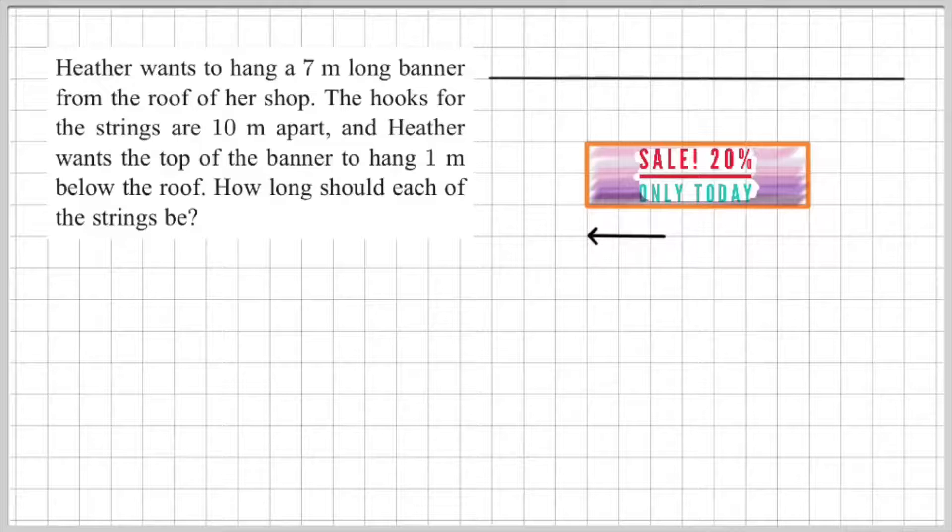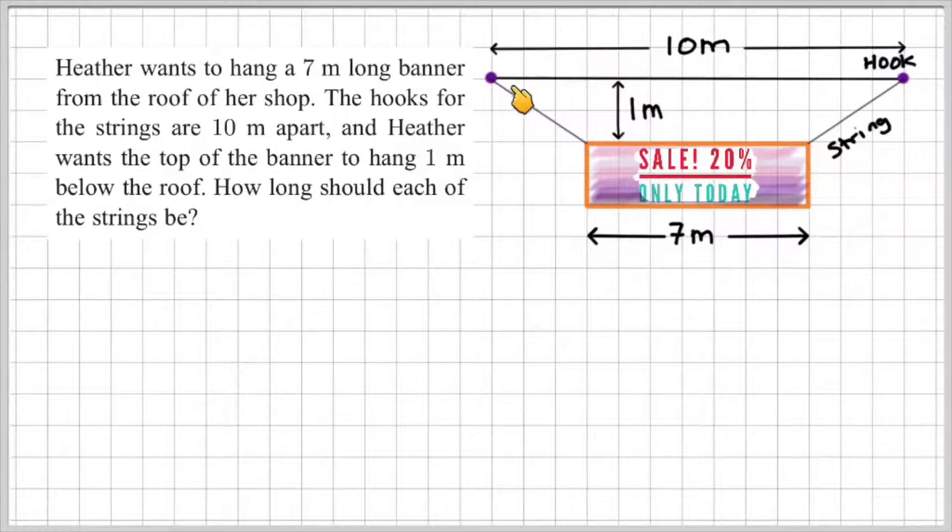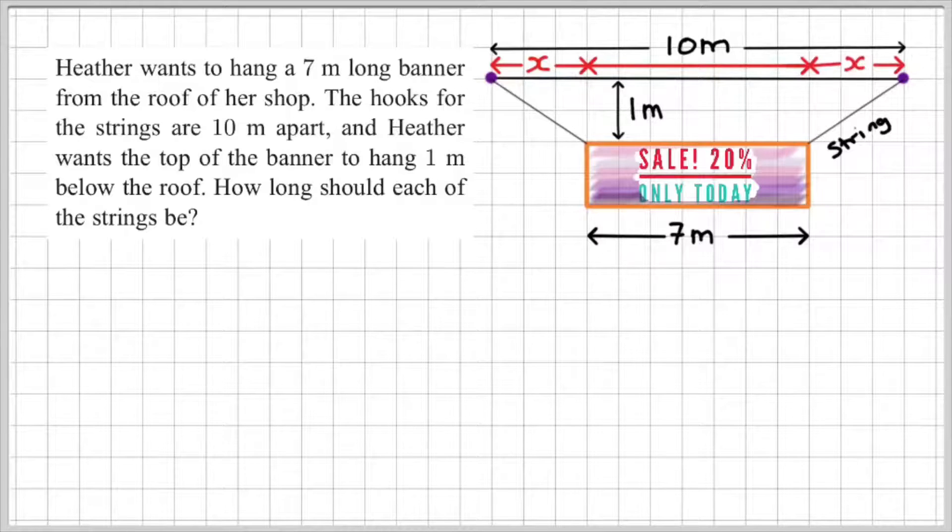So I've drawn a diagram of the banner, which is 7 meters long. And the hooks are 10 meters apart. And Heather wants the sign to hang 1 meter from the roof. So what we know from the question is that the banner is 7 meters long. That means that this part here would also be 7 meters, which leaves a little gap here and here. And so I can label that as x and x.